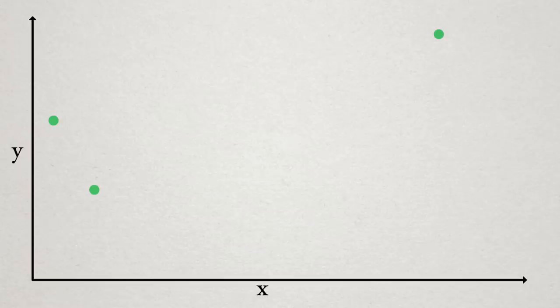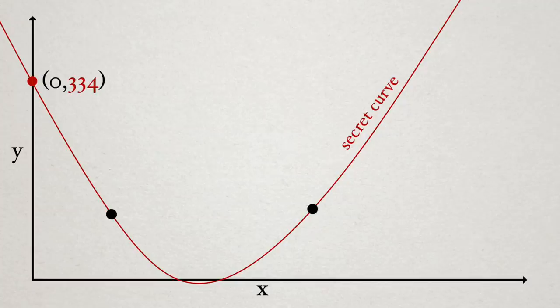For example, the simplest curve is a parabola which can be defined by 3 points. To create a secret parabola, we start with the secret point as before, and then we generate 2 random points to define the secret curve. Then we can generate as many secret shares as we'd like along the curve.